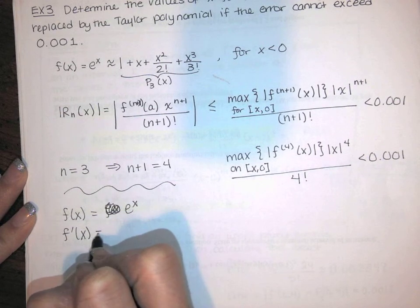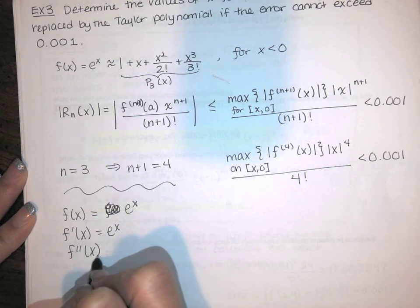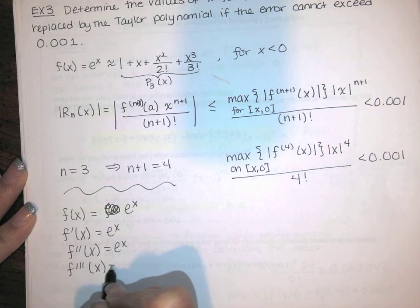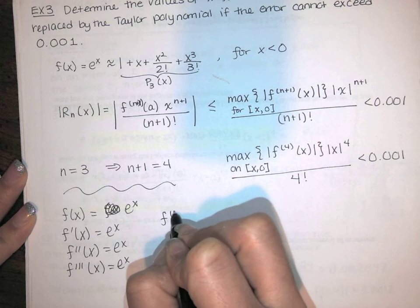The function is e to the x. So the first derivative is e to the x. The second derivative is e to the x. And you continue in this way. The third derivative is e to the x. And the fourth derivative is e to the x.